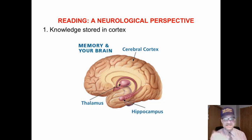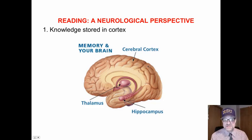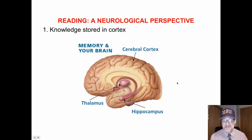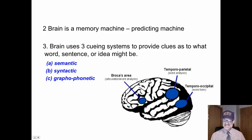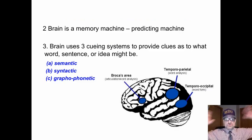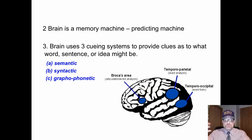Step one, or idea one: knowledge. All our knowledge is stored in the cortex — the cerebral cortex, or the neocortex — all these wrinkly little things. All the knowledge you have gained, all the experiences, are stored there. The brain is essentially a memory machine. You have stored everything you have learned and experienced right there, and you use that to predict what is and what might be.